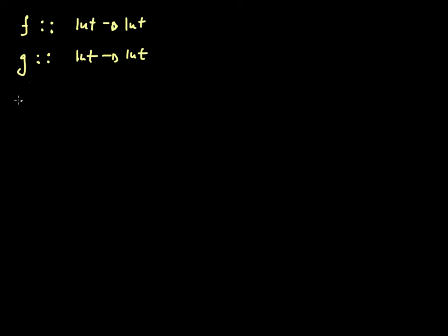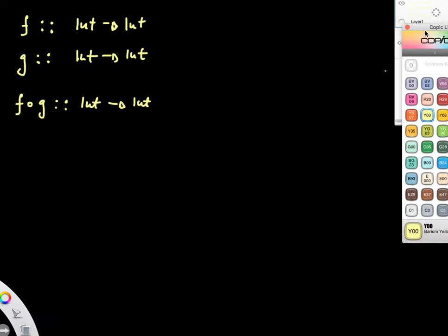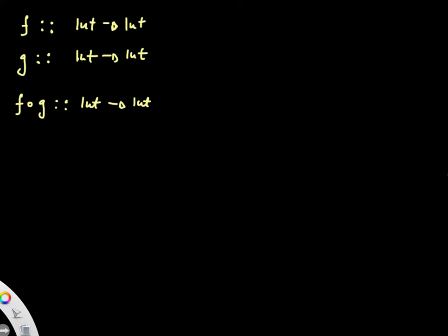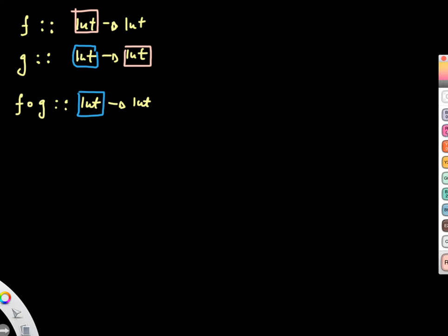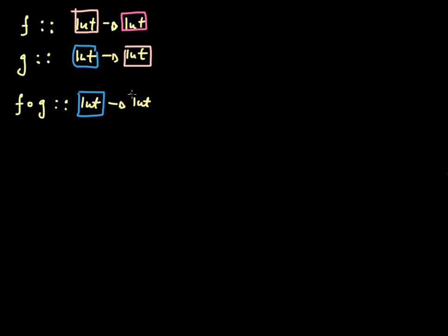As we've seen in earlier videos, the function composition of f with g is going to be a function that goes from an integer to an integer. I can see that g is a function that takes in as an input some integer — that piece in blue — and gives it back as an output some integer. Whatever that integer is, the output of g must match up with the input of f, such that the output of f — this purple box — matches that piece over there. Everything matches up because there is no type mismatch, and this works perfectly.